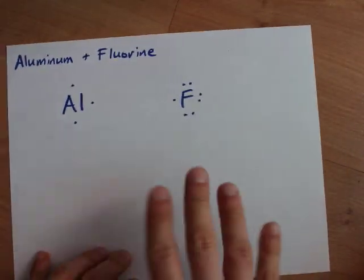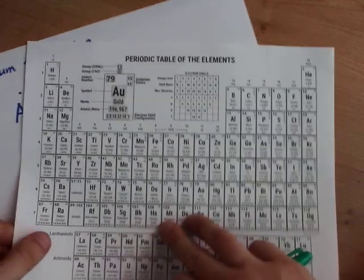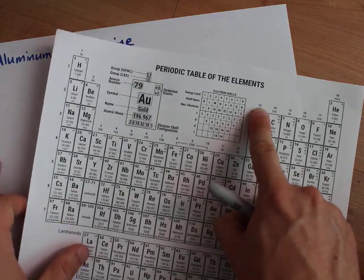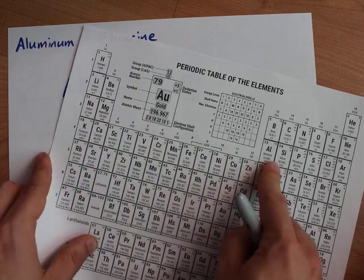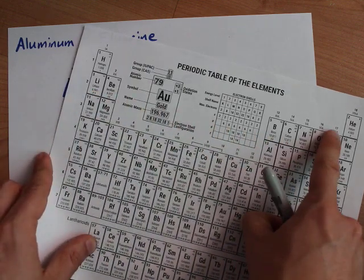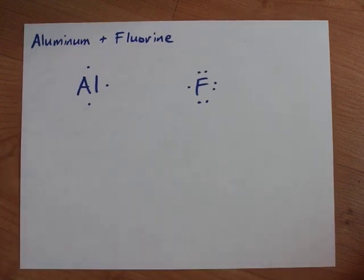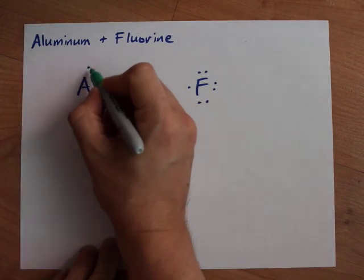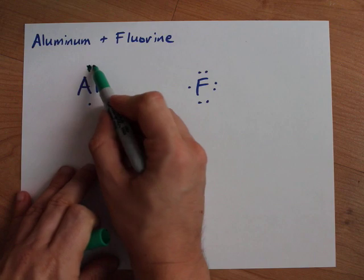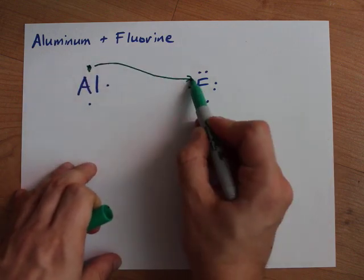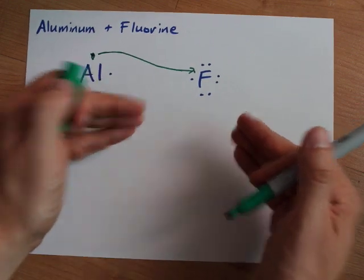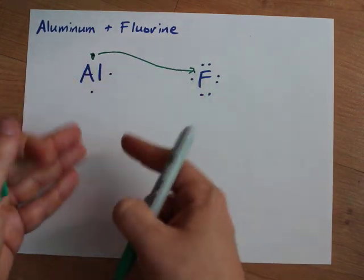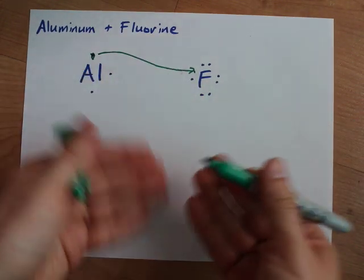Let's do aluminum and fluorine. Aluminum brings three valence electrons — it's three atoms over from the left. Fluorine brings seven; it's in group 17. Aluminum can donate one of those electrons to fluorine to give it a full outer shell. That fluorine is now happy — it has a satisfied octet. But aluminum still has two extra electrons to give away.